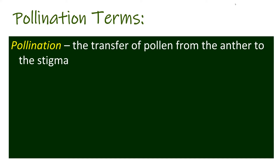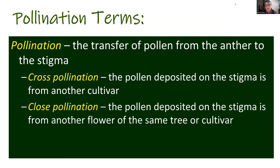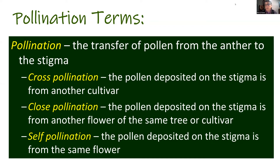There are different kinds of pollination as defined by Gadi Sham. Cross pollination is when pollen deposited on the stigma comes from a different variety — for example, moving pollen from Zutano to the stigma of Hass. Close pollination is when pollen is deposited on the stigma from another flower on the same tree or of the same variety — such as a Hass pollen grain coming from a different flower on the same tree or another Hass tree in the grove.